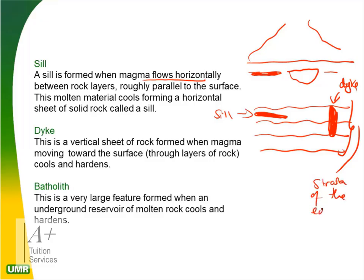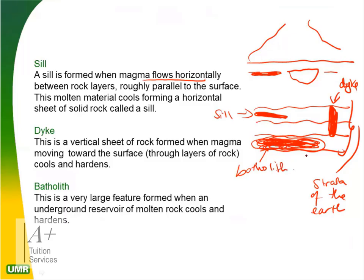The strata are the layers of the earth. A batholith is a very large feature formed from an underground reservoir of molten rock that cools and hardens. It's much bigger than a sill or dike — it could be horizontal or vertical, but it is huge. Let's go to the whiteboard for a proper diagram.